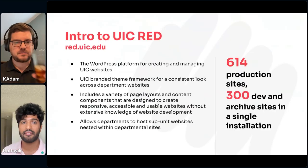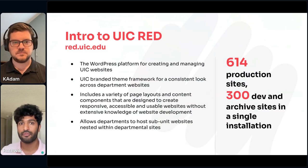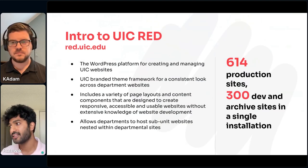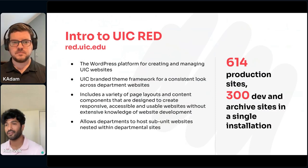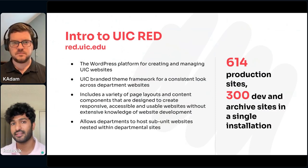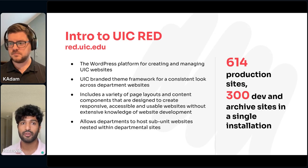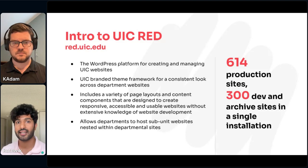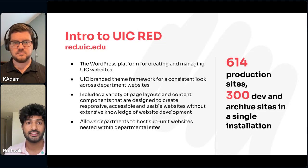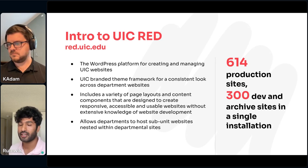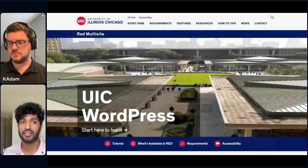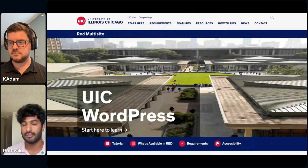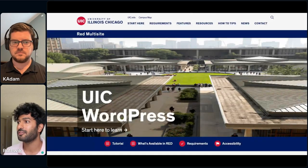The platform we have is called Red. UIC Red is a platform for creating and managing websites across the university with a consistent theme and design. People across the campus can host their websites without extensive knowledge of development. Currently, Red hosts around 614 production sites and 300 dev sites under a single installation. We have a simple landing page where people can reach out, request websites, and start working.